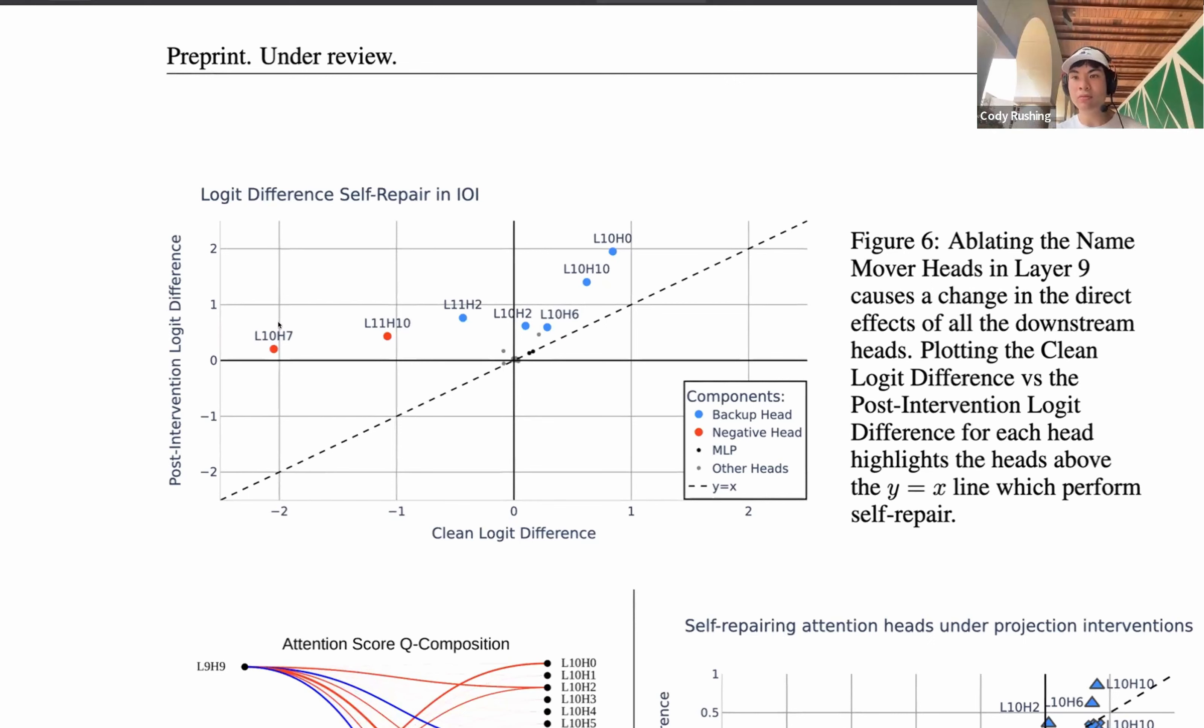And on this x-axis here, we're seeing the individual heads, how much they contribute to the logit difference in a clean run. So on the left here, we have our copy suppression head 10.7. It's writing against the correct token, as we all know. And on the right here, we have other heads that are in layer 10, but are writing to the correct direction. We ablate all the name mover heads in layer 9. What happens as a result is a lot of these heads dramatically change. In particular, we see on the left, layer 10, head 7, now starts contributing a bit positively towards the correct token. In reality, you can assume it's zero, but the major point here is that it goes from writing against the correct token to doing nothing at all.